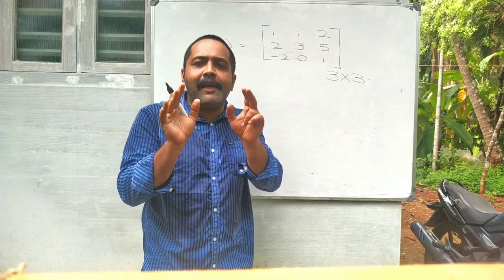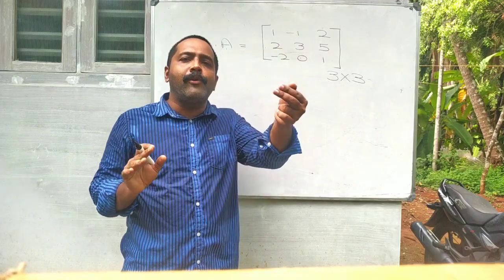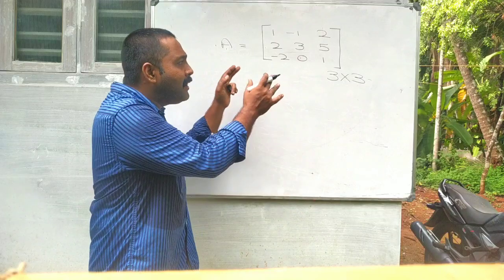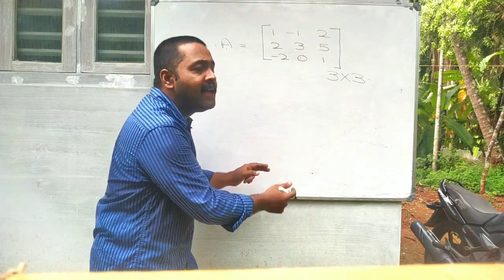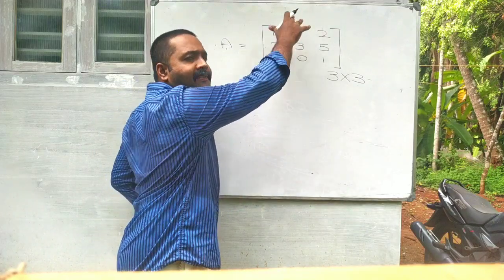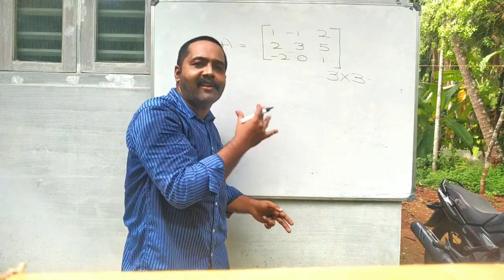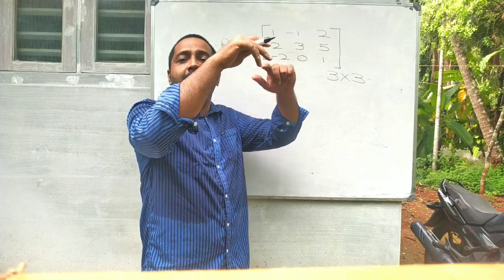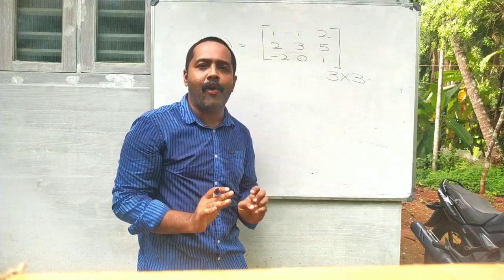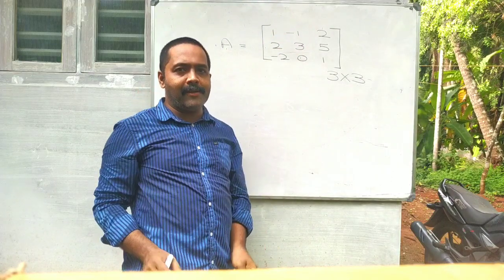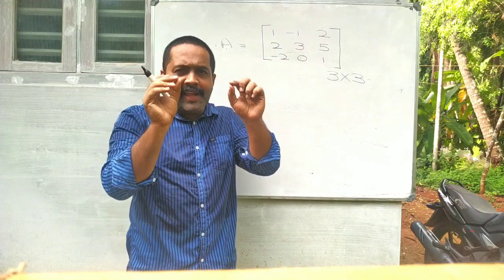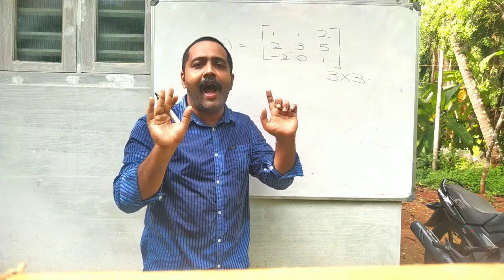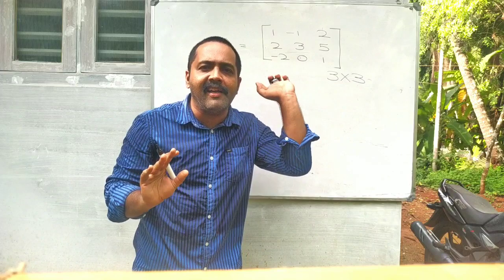Now, cofactor matrix is the transpose of a matrix. Replace the elements by its cofactors. Cofactor matrix is the transpose of a matrix. Interchange the rows and columns. That is adjoint. We can find the adjoint within 30 seconds.